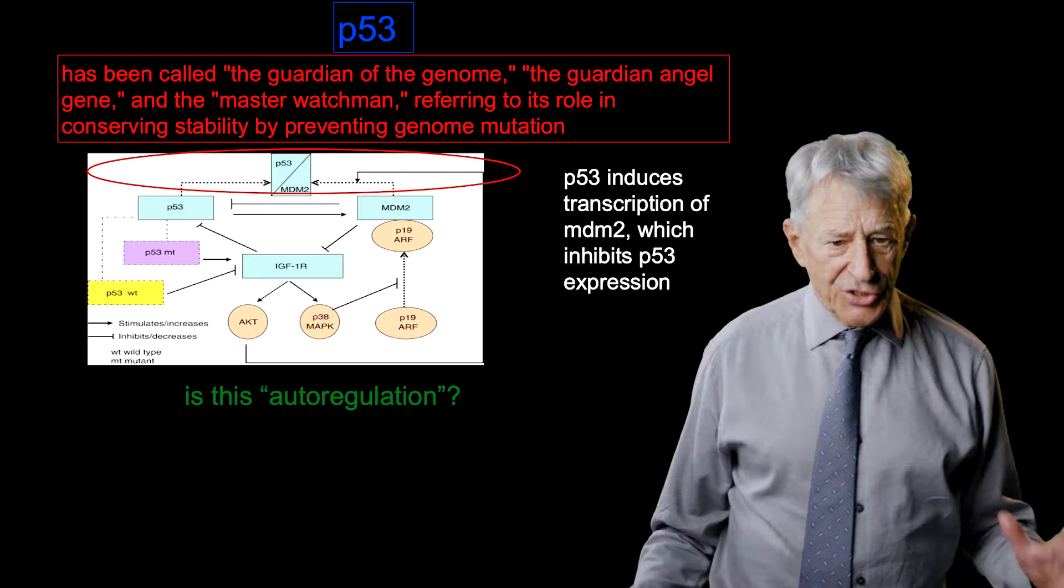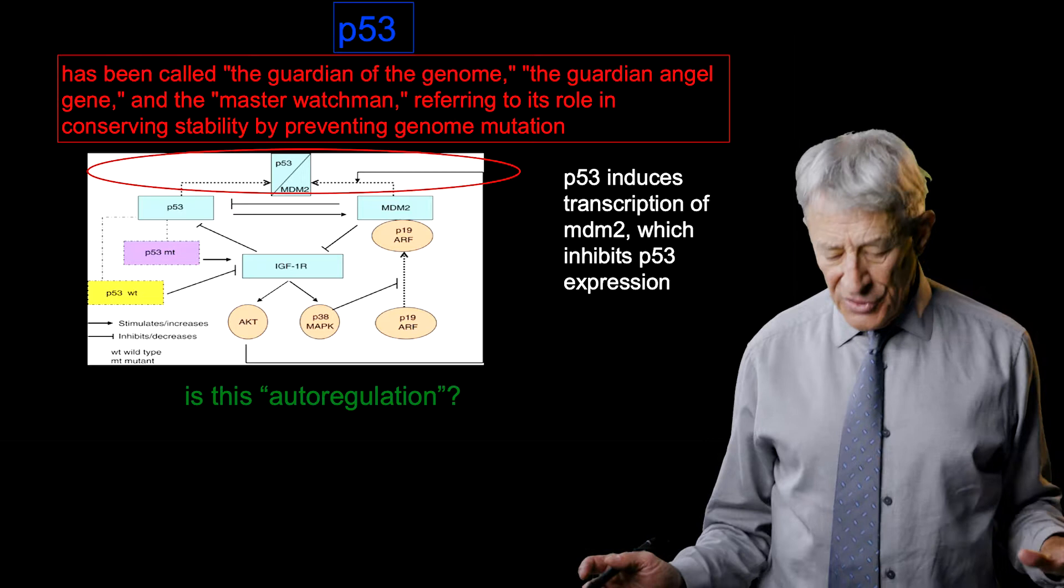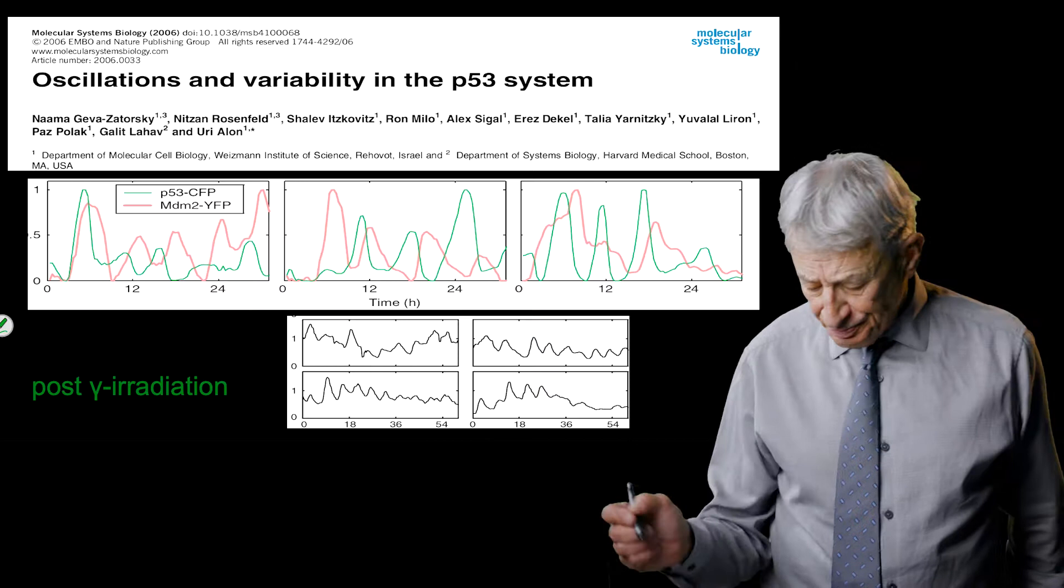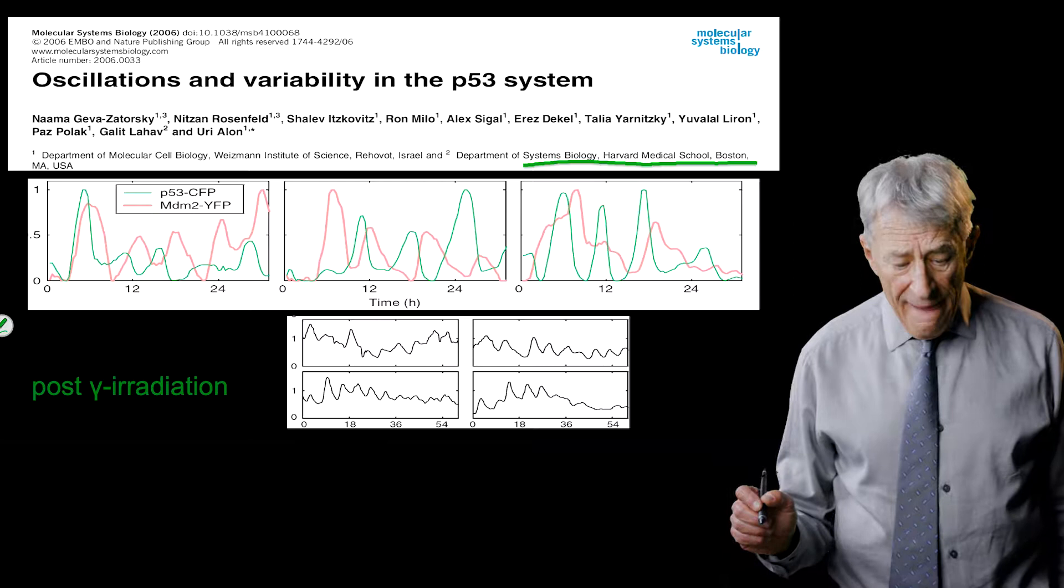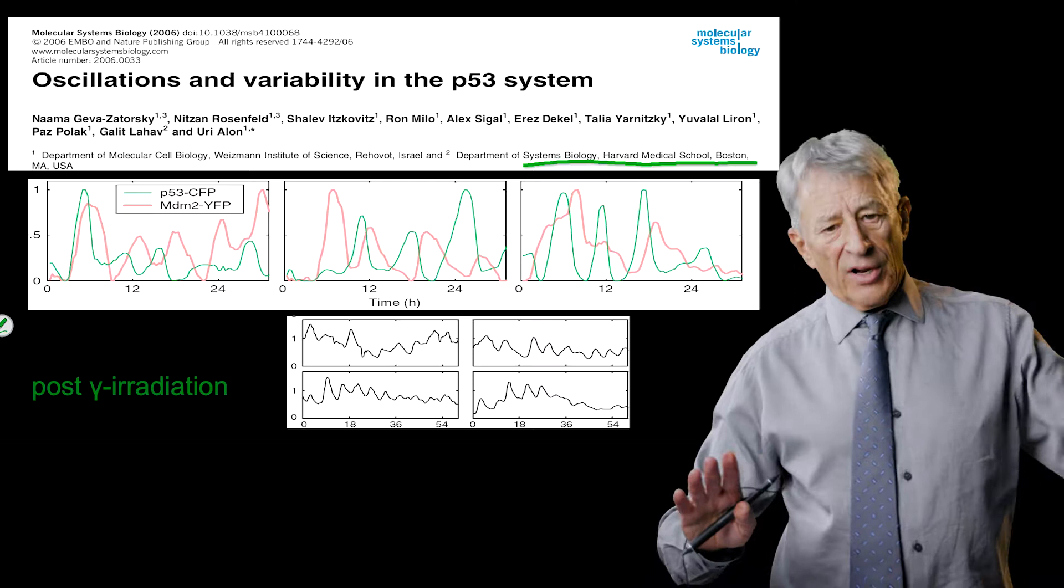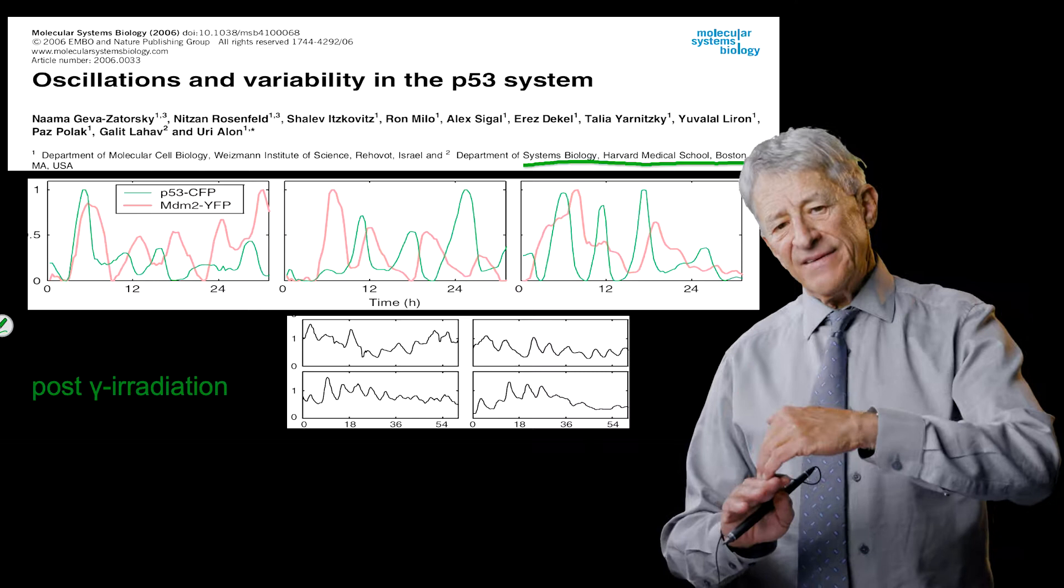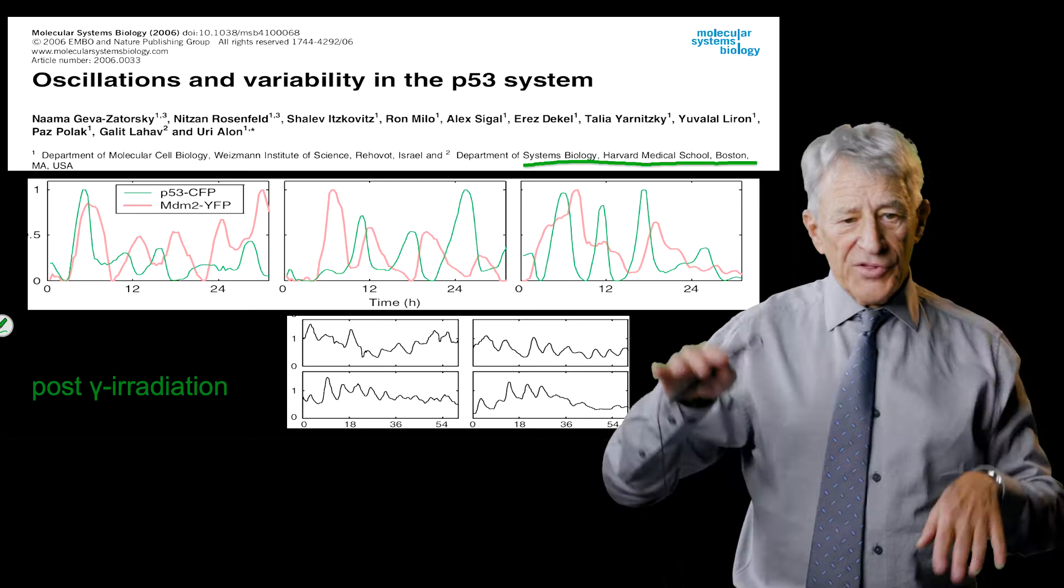There's another major case of oscillatory gene expression, which we will also be talking about, which is the gene p53. Very interesting paper from the group at Systems Biology at Harvard Medical School. They took this gene, and they took another product, which is activated by the gene, and then feeds back negatively on the gene.